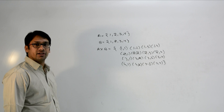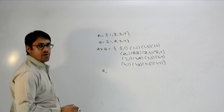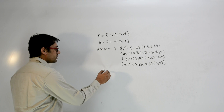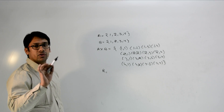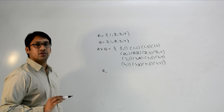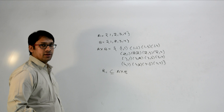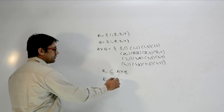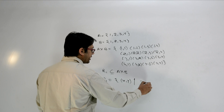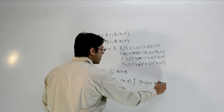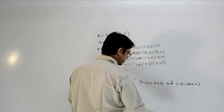Now if I define a relation over A×B, I am saying that for example there is a relation R1, and this relation R1 will always be defined over A×B. Any relation over any set will always be a subset of that cross product. Assume relation R1 is defined as: R1 = { (x, y) | (x, y) ∈ A×B and y divides x }.